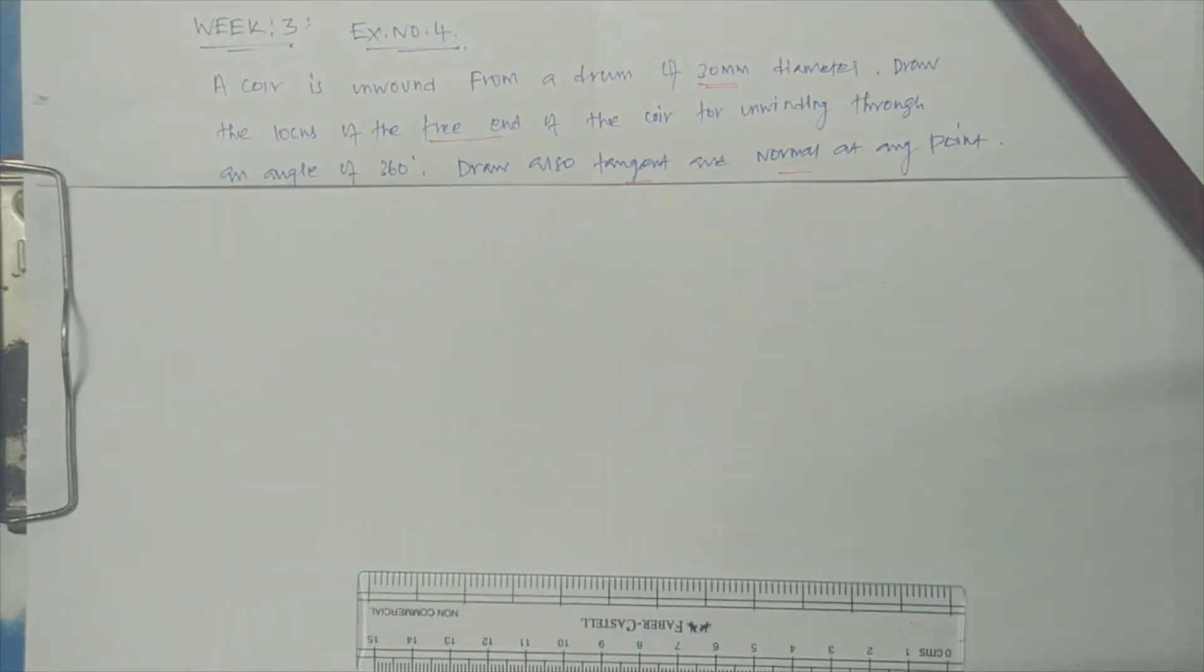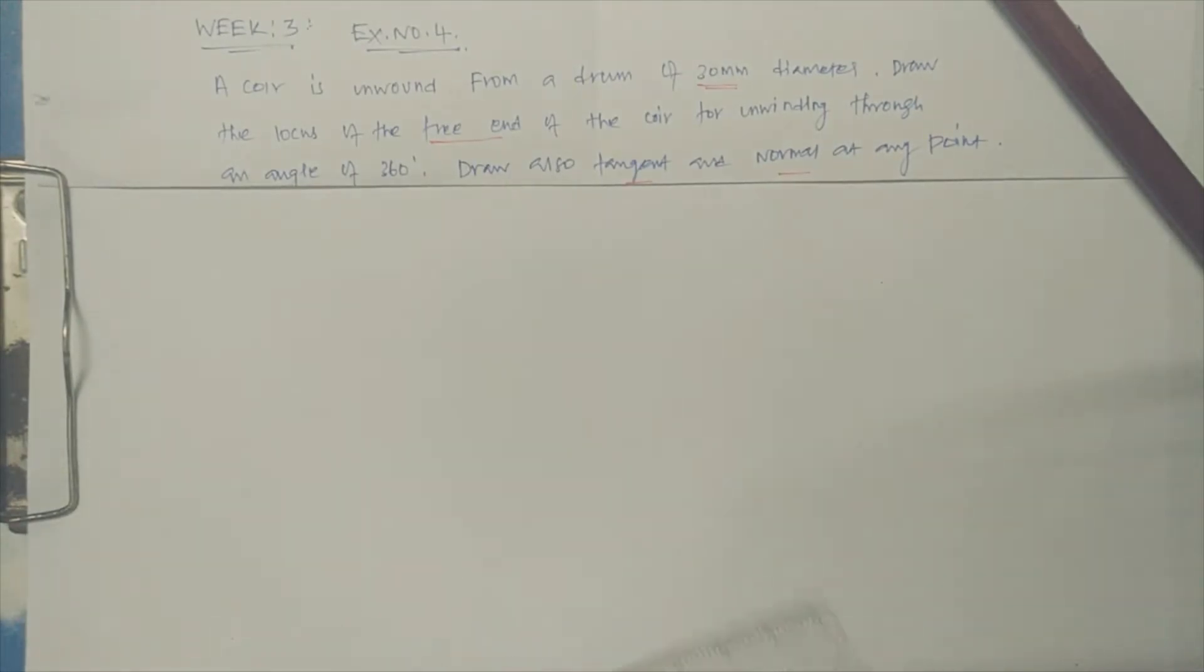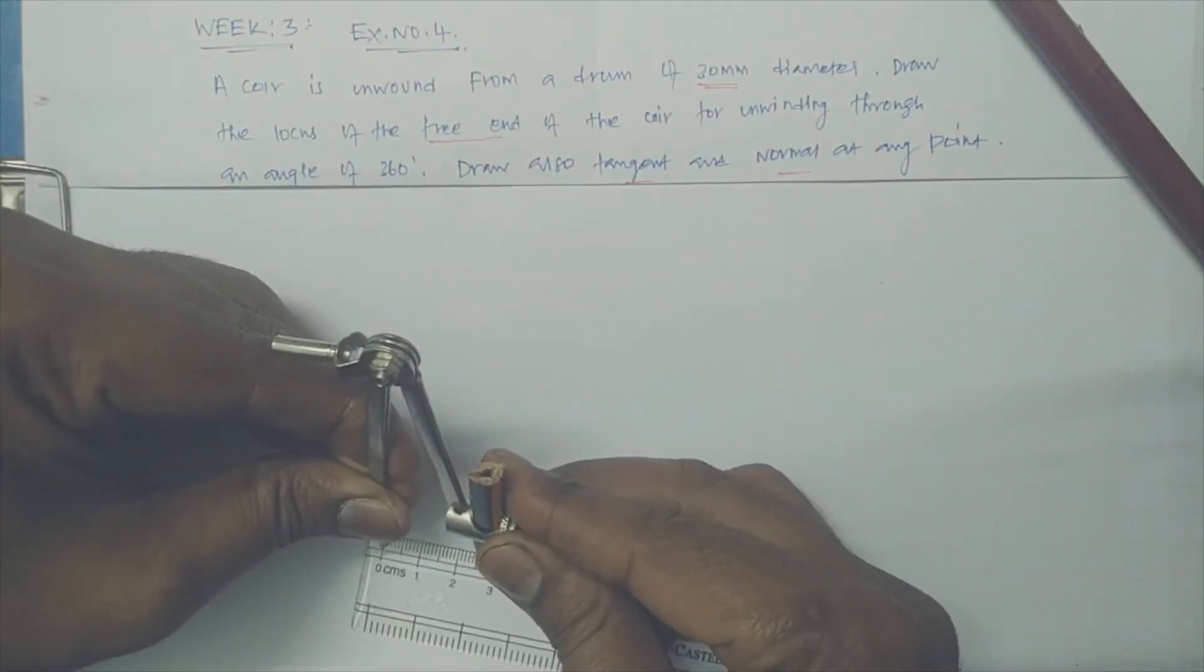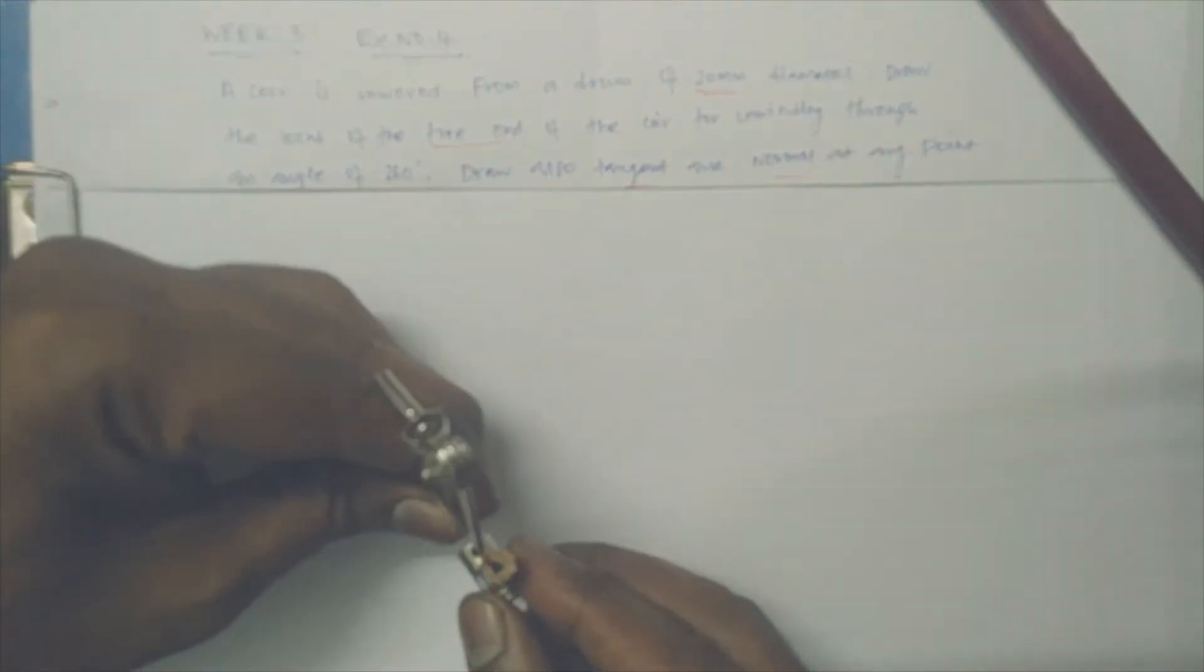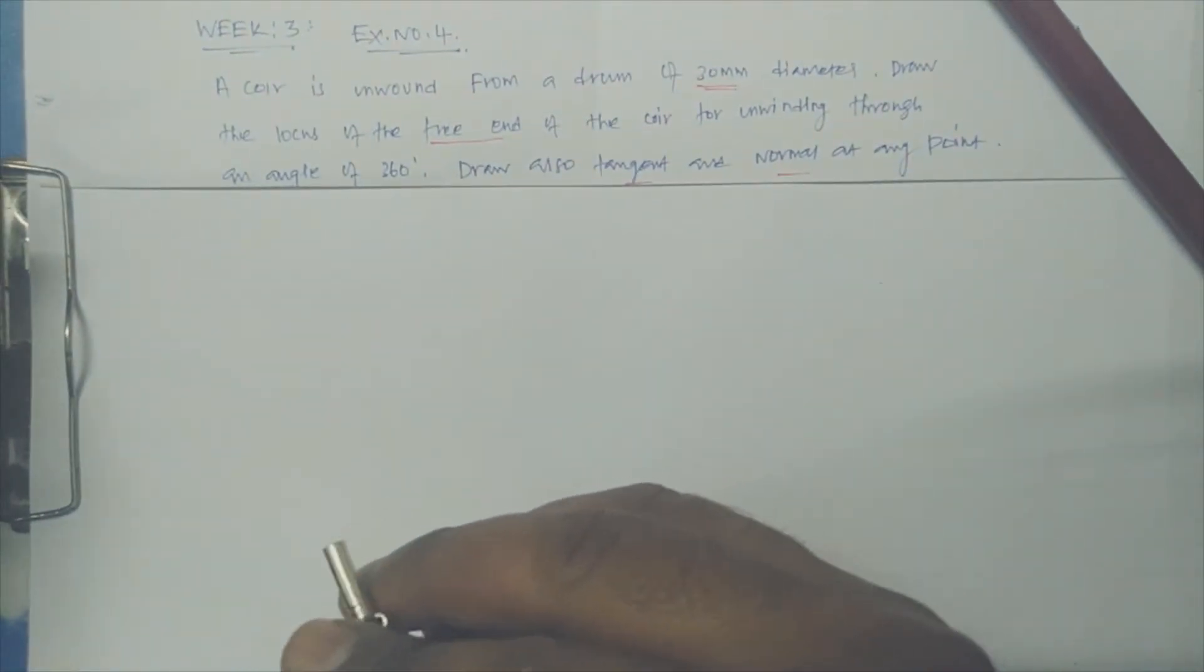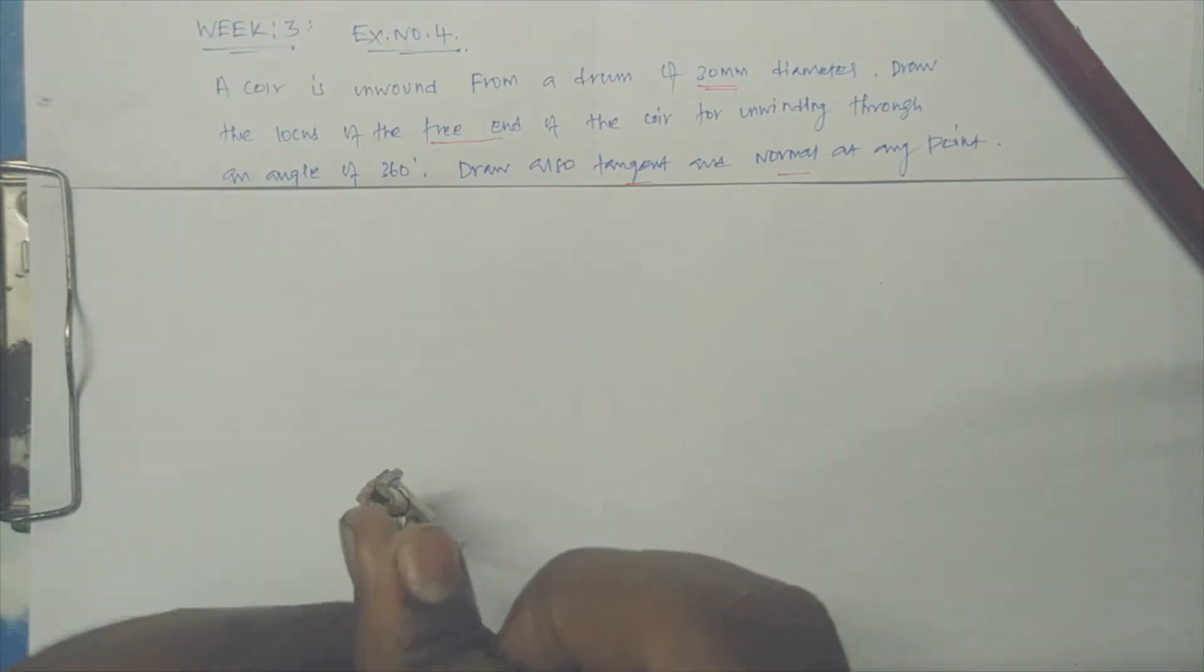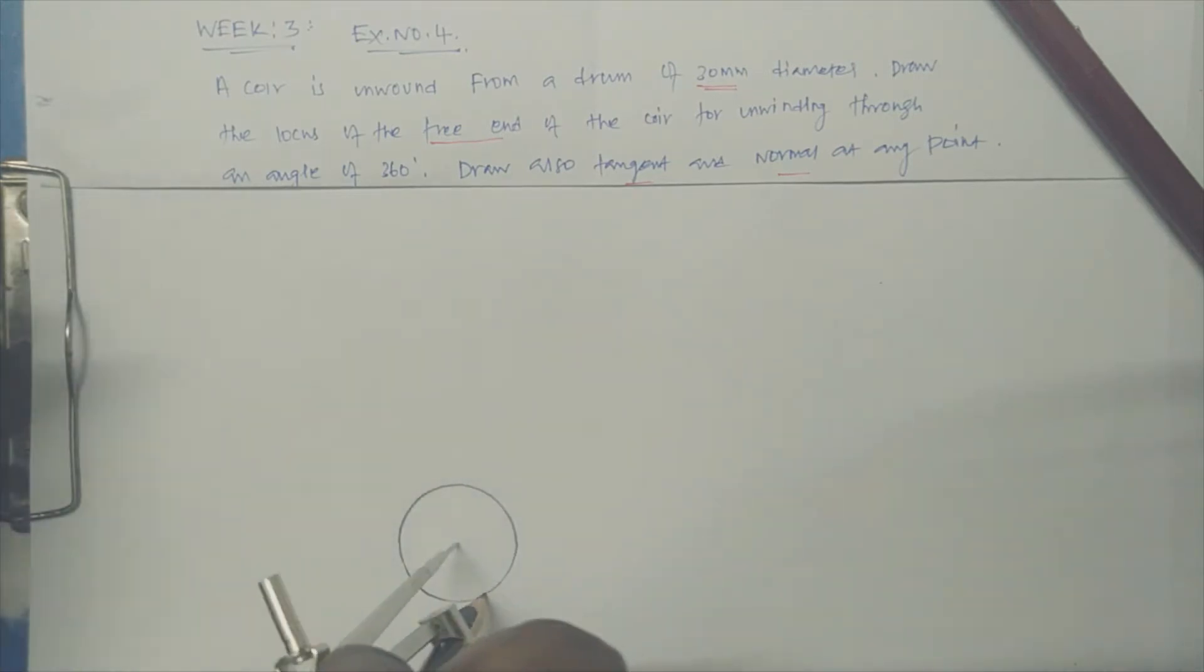Let us draw 30 mm diameter of drum. So initially 30 diameter, it's supposed to be 1.5 as the radius. Just make one circle. So let it be the first circle.